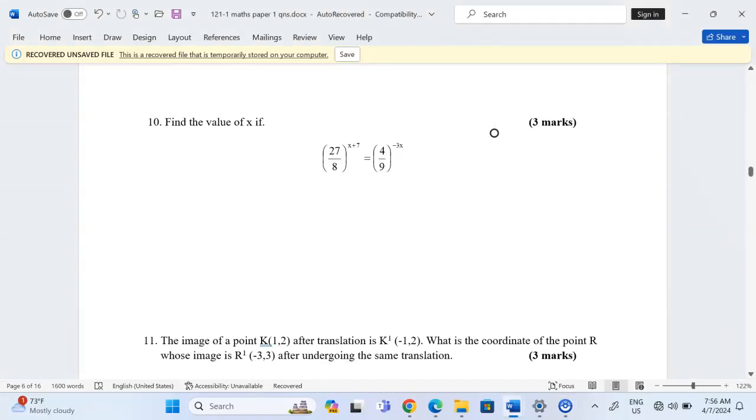Find the value of x if 27 out of 8 raised to power x plus 7 equals to 4 out of 9 raised to negative 3.